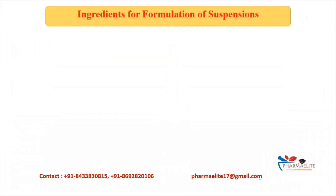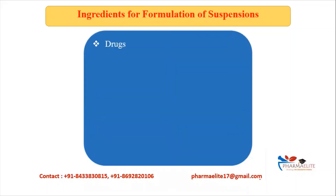Now let's look at the ingredients for formulation of suspension. First is the drug or API, which is the main ingredient. Second is the vehicle, which is the continuous phase of the suspension. Third are suspending agents, which increase the viscosity of the vehicle so that solid particles won't settle down easily, and also form a film around solid particles to reduce inter-particle interactions.